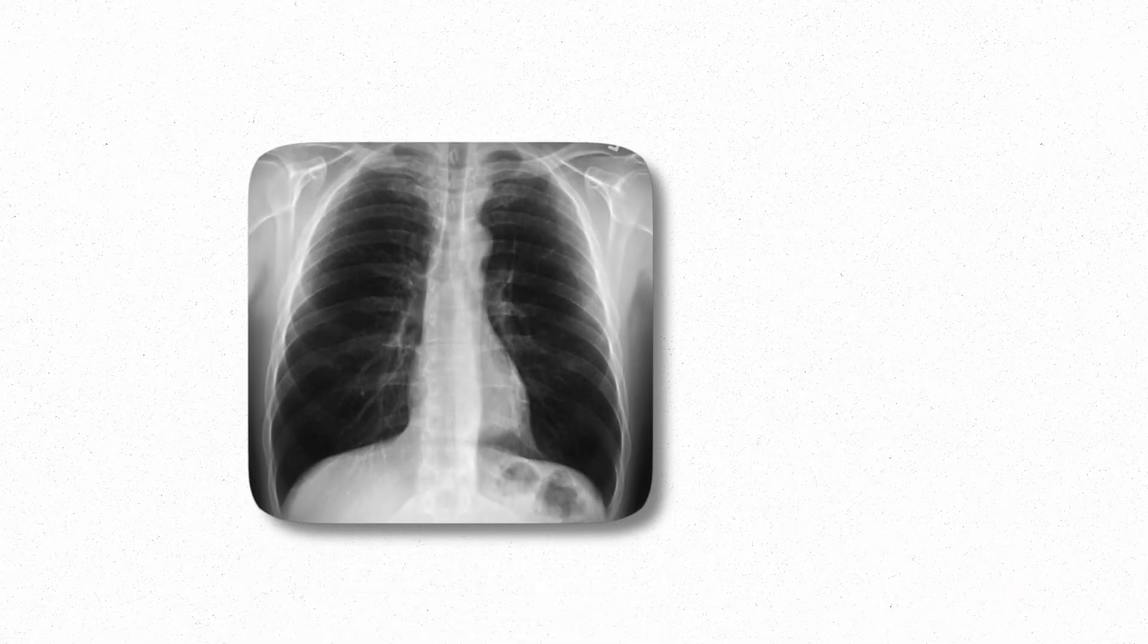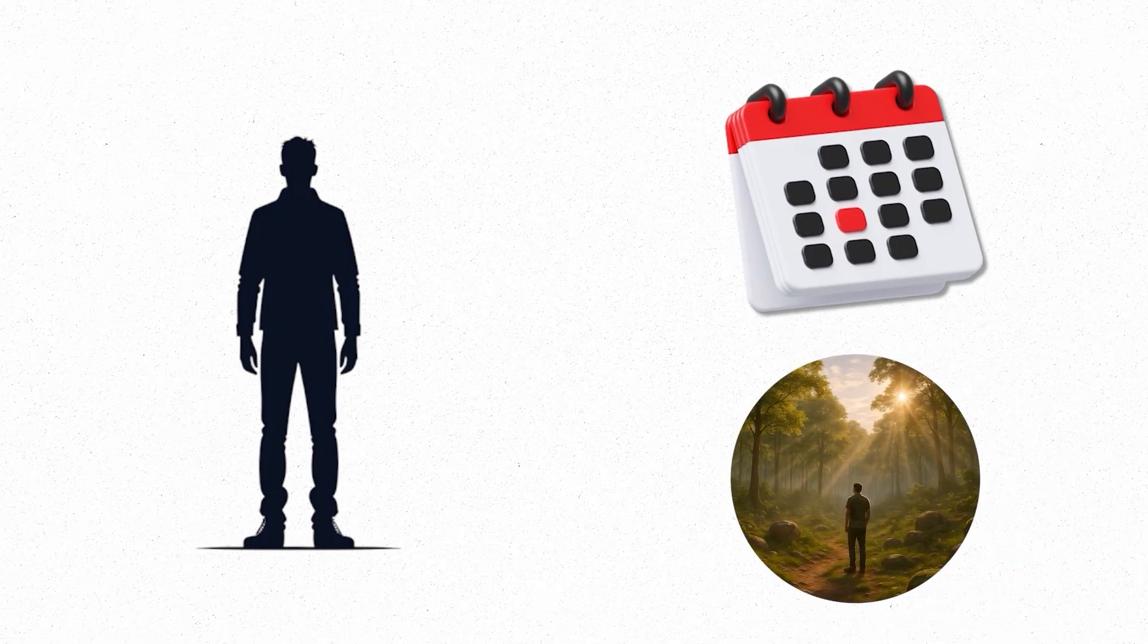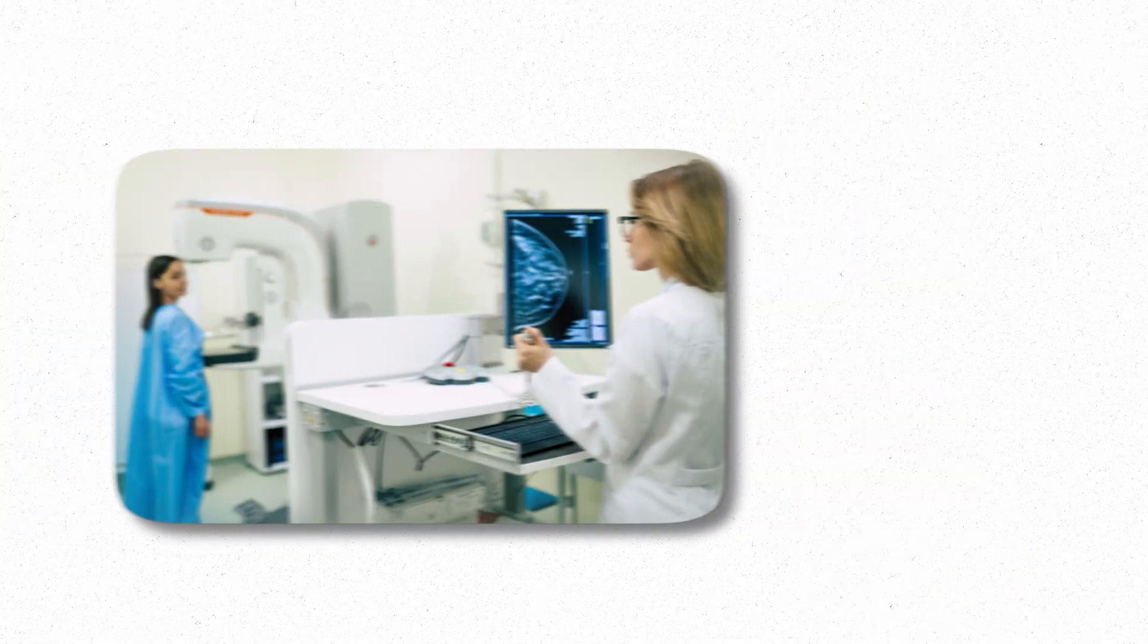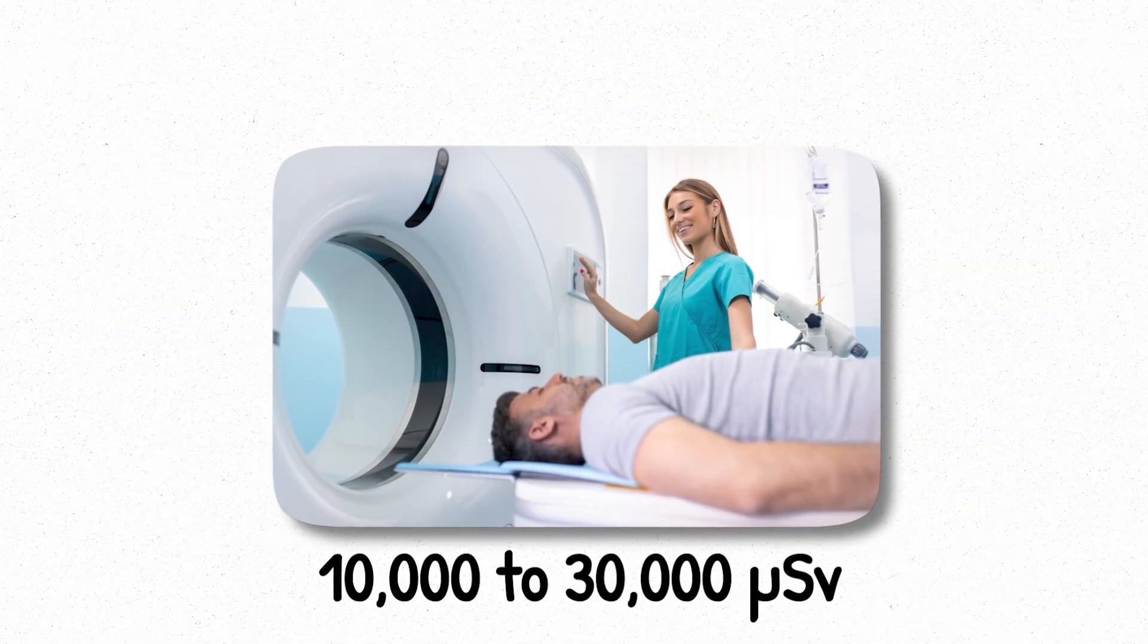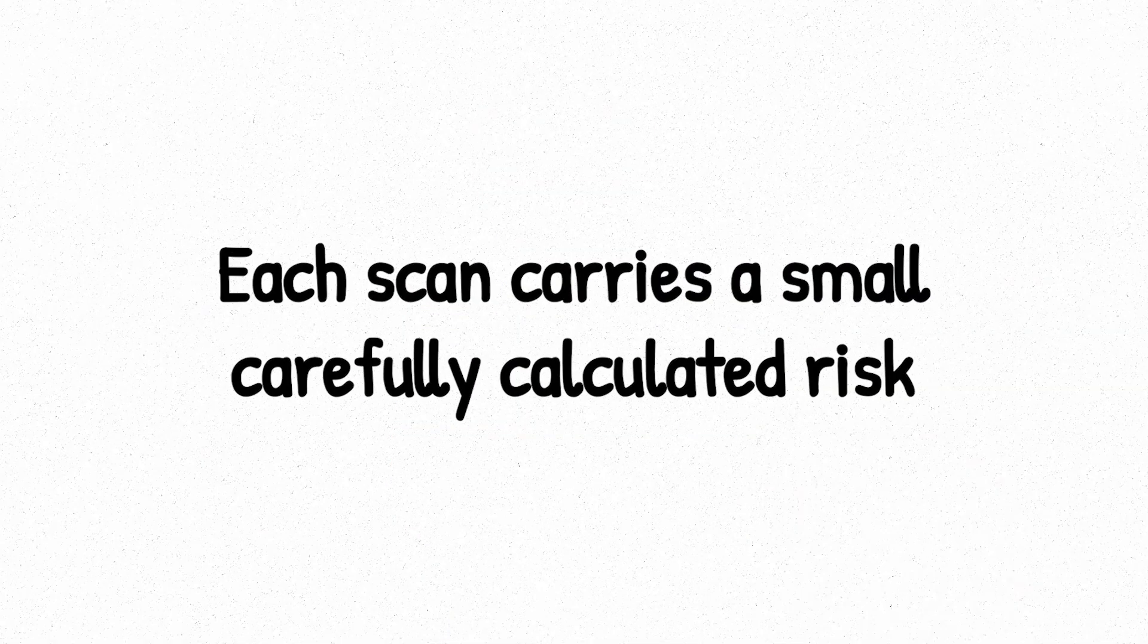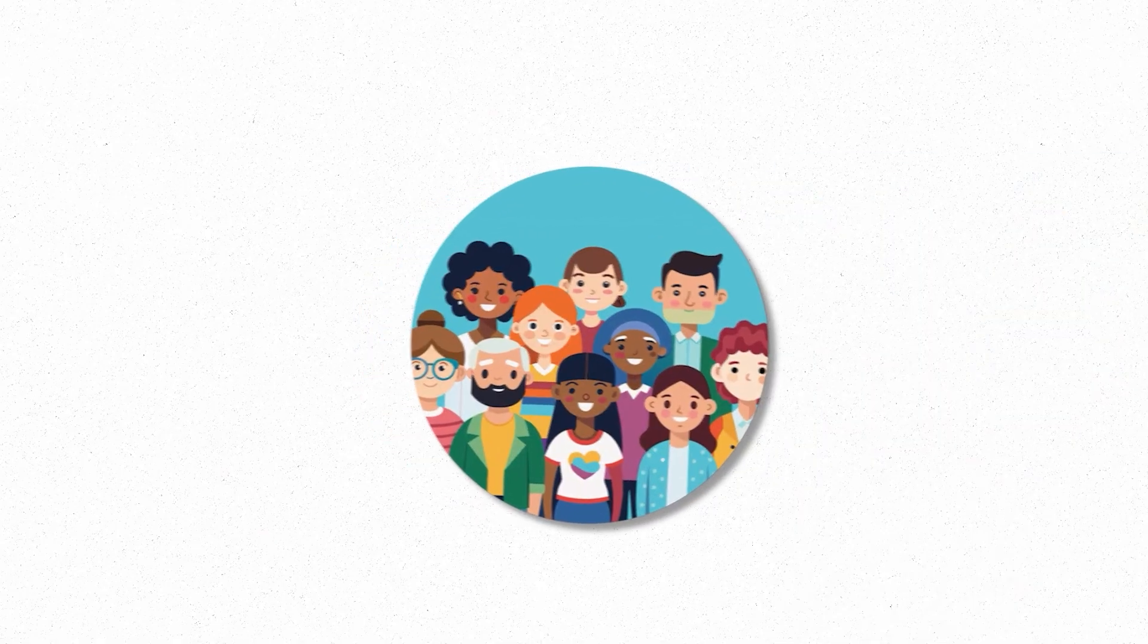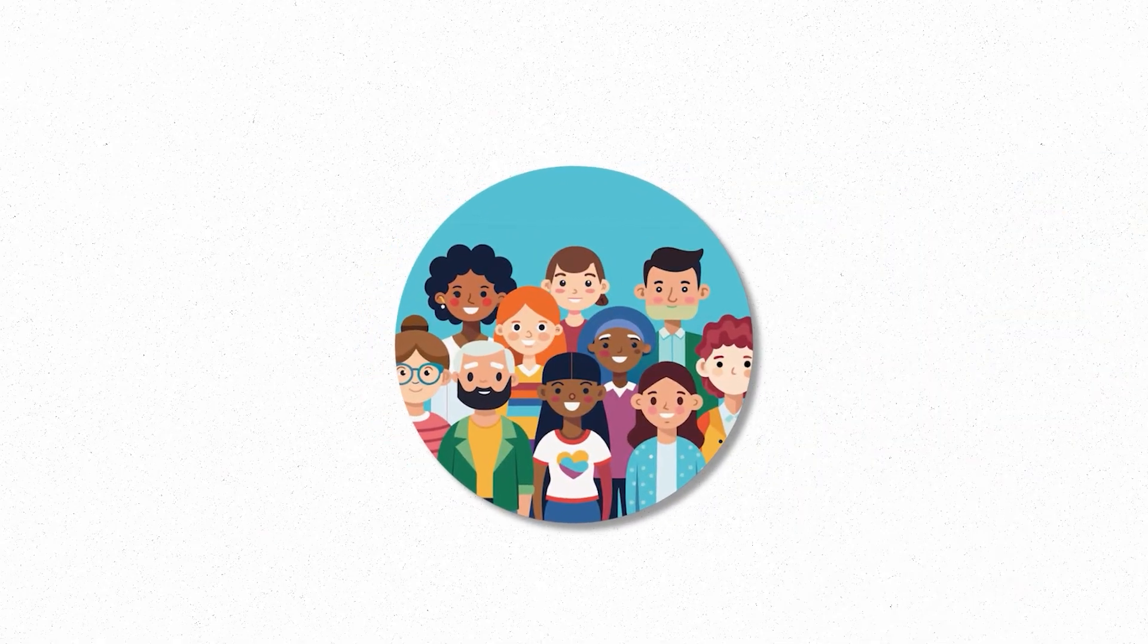A chest x-ray delivers about 100 microsieverts. That's the same dose you'd absorb in roughly a month of natural background radiation, condensed into a split-second flash. A mammogram gives about 400 microsieverts. And a CT scan? That's a leap. A full-body CT can expose you to 10,000 to 30,000 microsieverts, or 10 to 30 millisieverts in just minutes. These doses are not dangerous on their own, but they're no longer negligible. Each scan carries a small, carefully calculated risk. For most people, that risk is outweighed by the diagnostic power these scans offer.